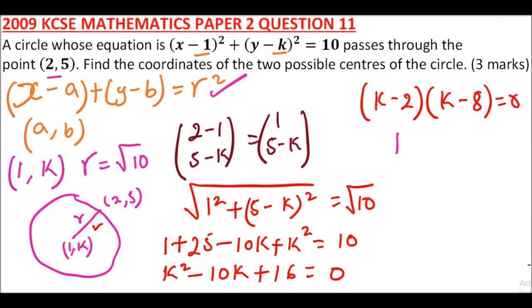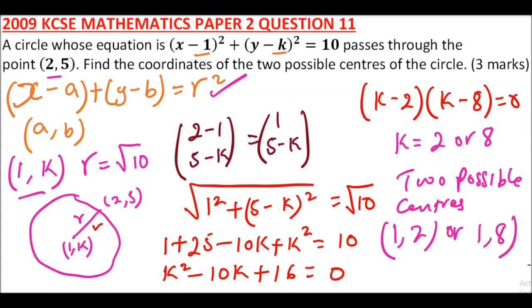And therefore the two possible centers of the circle will be, since we had said the center is (1, k), so it will be (1, 2) or it will be (1, 8). So that is how you work out that. You get yourself three marks.